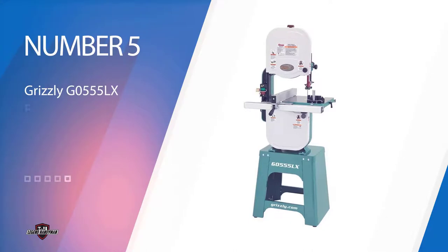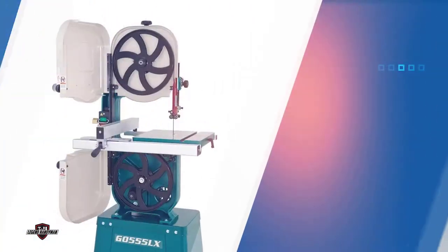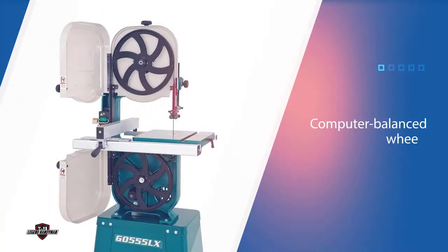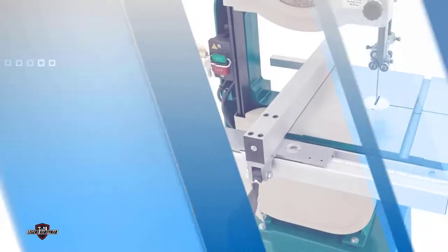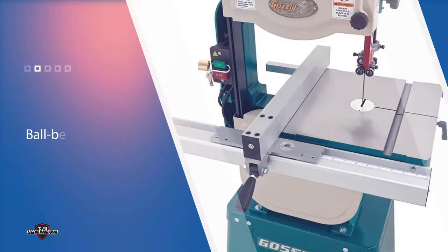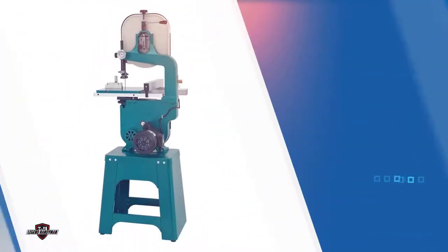Number five: Grizzly G0555LX bandsaw for resawing. The Grizzly G0555LX deluxe bandsaw 14 inches is one of the best vertical bandsaws that are currently available on the market. Its computer balanced wheels, ball bearing construction, and cast iron frame are only a few reasons why this bandsaw is so widely appreciated.